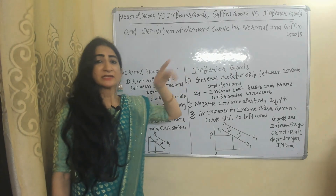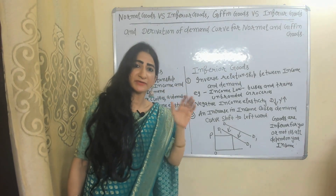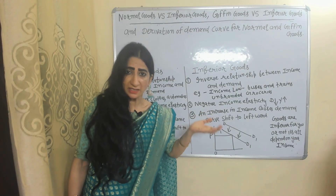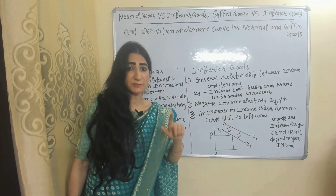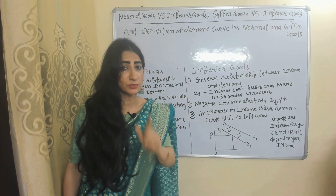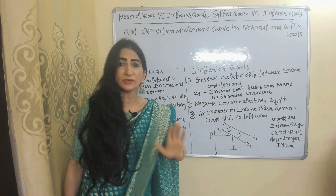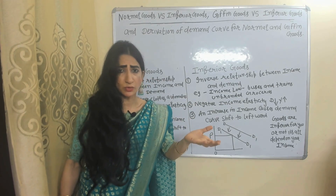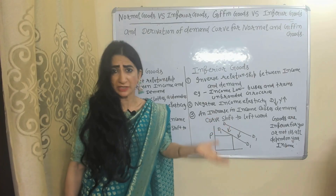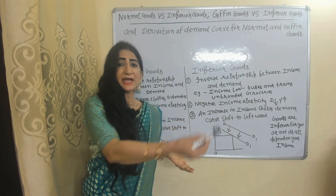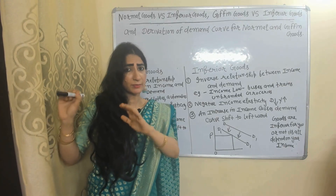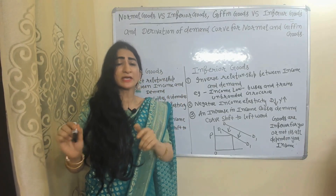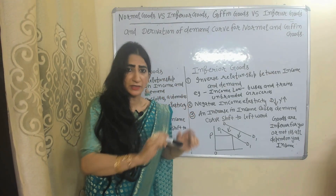In case of inferior goods, there is an inverse relationship between income and demand — income increases, demand falls; income falls, demand increases. There is no specific type of inferior goods; goods are inferior for you or not depending on your level of income. For example, when my income was very low, I used to purchase non-branded products, but as my income increased, I started buying branded products.